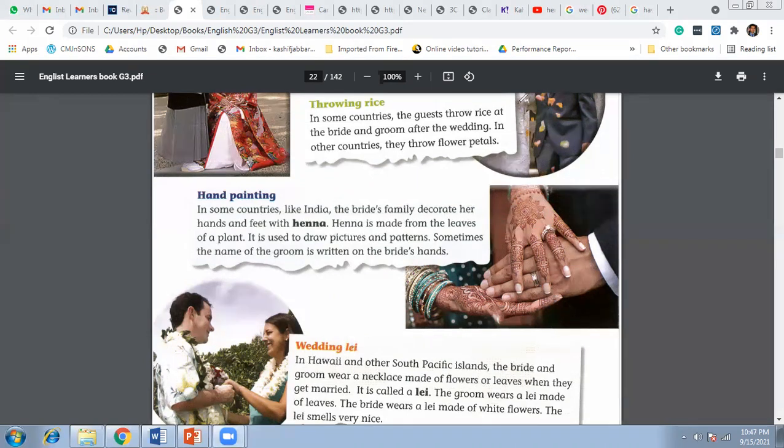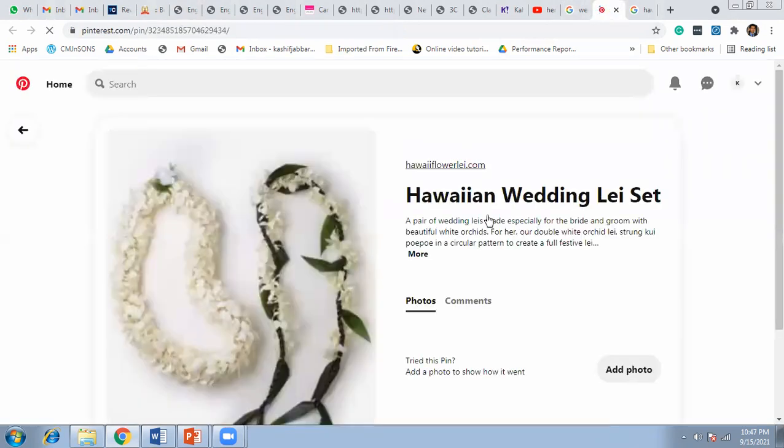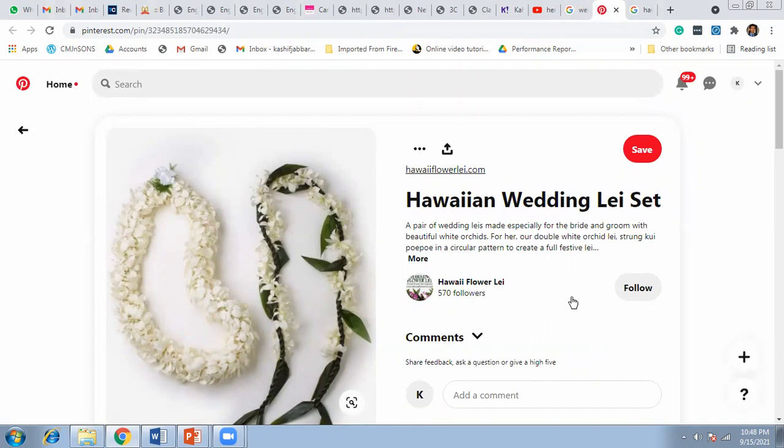The last custom is the wedding lei. In Hawaii, a state in the USA, and other South Pacific islands, the bride and groom wear a necklace made of flowers or leaves. This necklace is called a lei. The groom wears a lei made of leaves, while the bride wears a lei made of white flowers. The lei smells very nice. You can see in the picture the green lei with leaves for the groom, and on the left side, the necklace made with white flowers for the bride.